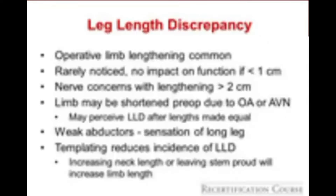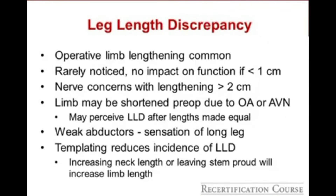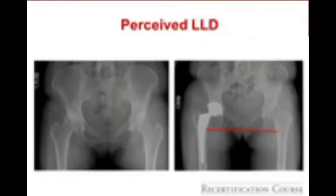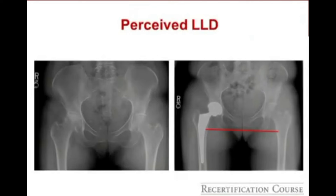Slight lengthening of the operative limb is fairly common after total hip arthroplasty. Most patients rarely notice or have functional impact if it's less than a centimeter. Once we get above 2 centimeters of lengthening, nerve issues become a concern. Patients may perceive a limb length discrepancy due to soft tissue differences or weak abductors — the so-called perceived limb length discrepancy that will resolve with time. Templating reduces the incidence of limb length discrepancy.